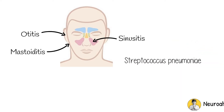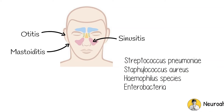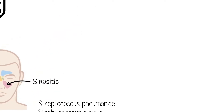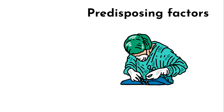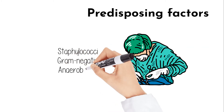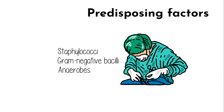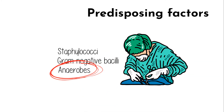Other etiologic organisms include gram-negative anaerobes including Staphylococcus aureus, Haemophilus species, or Enterobacteria. The most common causative organisms of bacterial meningitis in the patient who has had a neurosurgical procedure are Staphylococci, gram-negative bacilli, and anaerobes. It is important to recognize when an anaerobe may be the meningeal pathogen, as that possibility necessitates the addition of metronidazole to the empiric regimen.